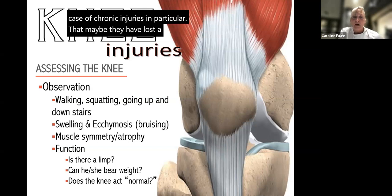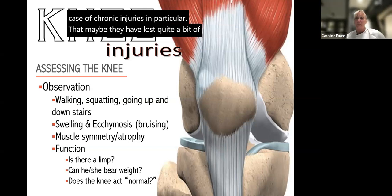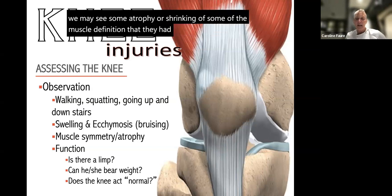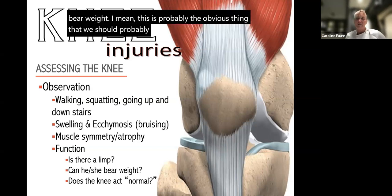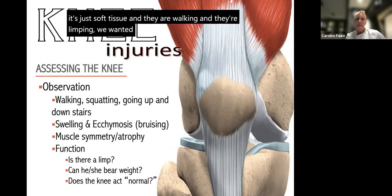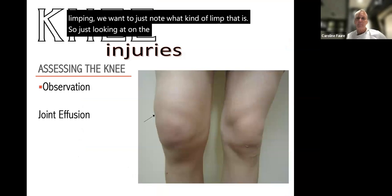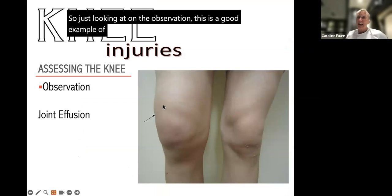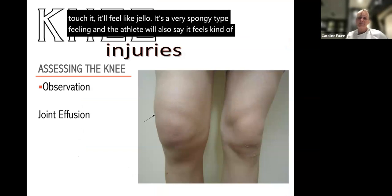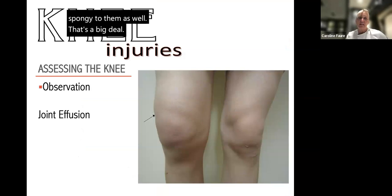Ask if they can bear weight to rule out fractures. If it appears to be soft tissue injury and they're walking with a limp, note what kind of limp it is. Swelling inside the capsule shows quite a bit of joint effusion — if you put your hands on it, it feels like jello, very spongy — and the athlete will also say it feels spongy to them. That's a big deal; get them into a doctor right away if you see that.